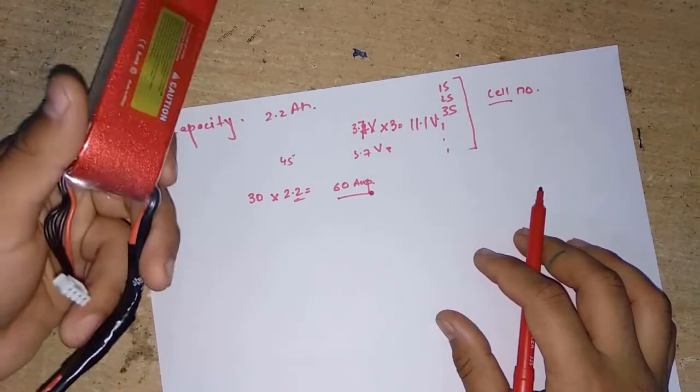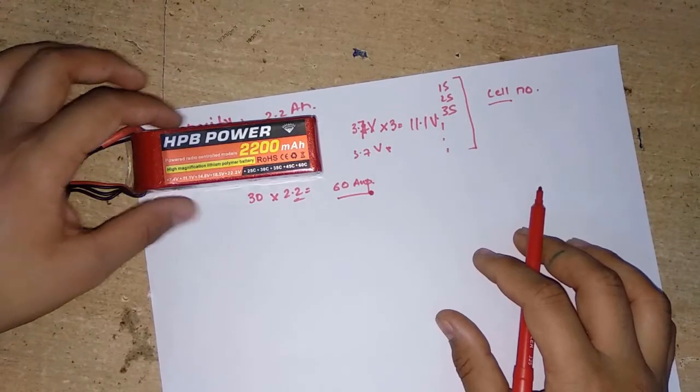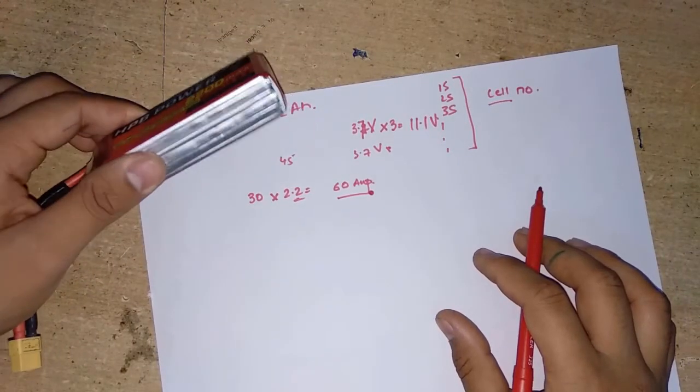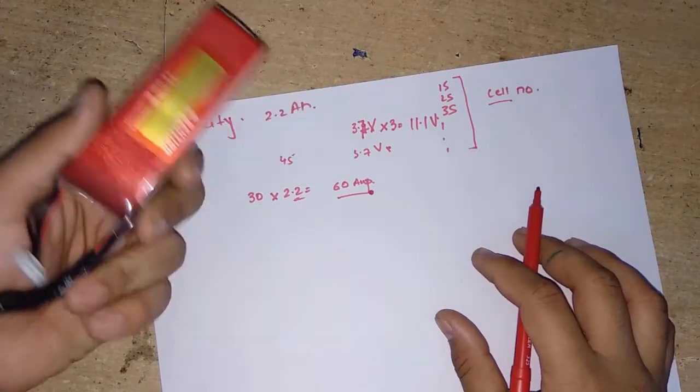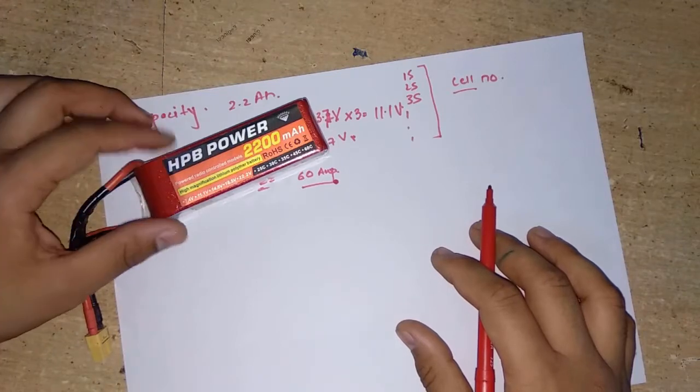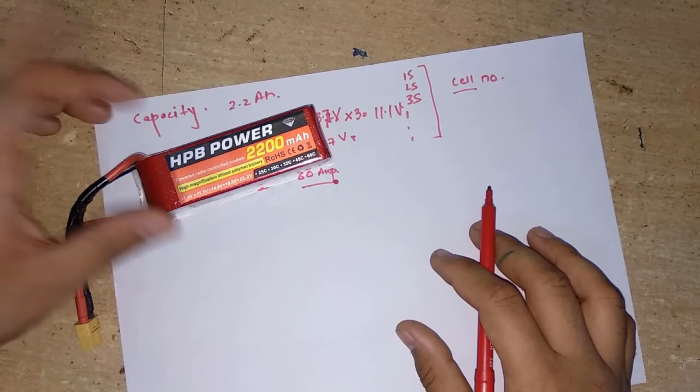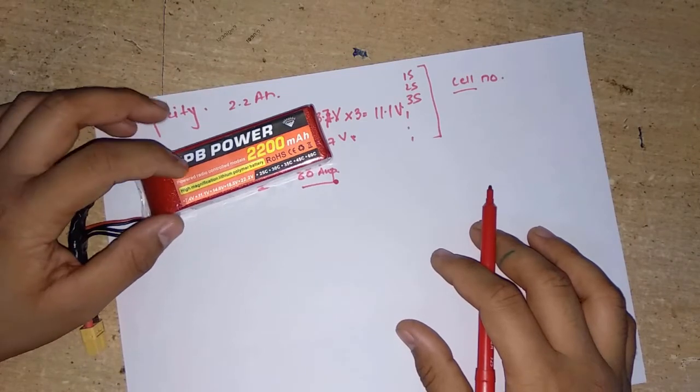One more thing: while using these batteries, be very careful with them. Try not to puncture these batteries or drop them or try to unpack them, because these are quite dangerous. If you accidentally puncture these batteries or poke any needle in there, they can burst and even catch fire. So be safe with these batteries.